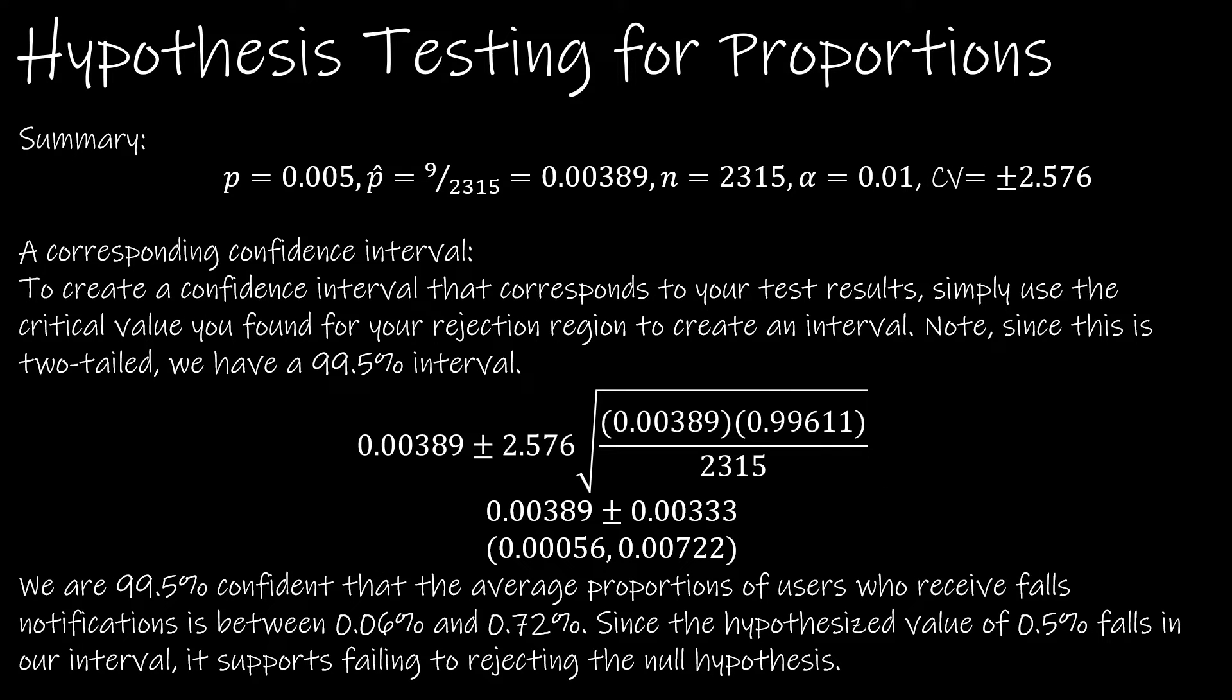Creating an interval again just asks us to use the critical value. We're still using that same formula. Remember, this is using P-hat and 1 minus P-hat as these two values. And we find 0.00056 and 0.00522.